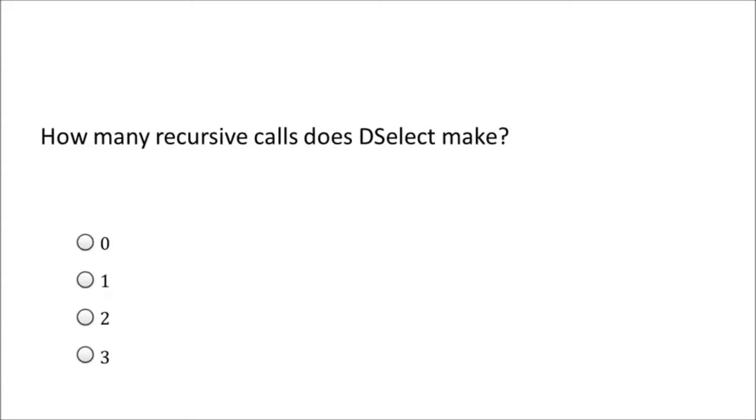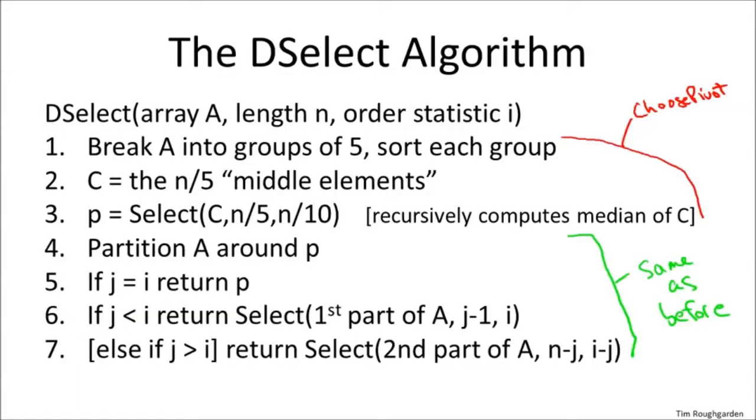All right, so the correct answer is two. There are two recursive calls in DSelect. And maybe the easiest way to answer this question is not to think too hard about it, and literally just inspect the code and count. Namely, there's one recursive call in line three, and there's one recursive call in either six or seven. So quite literally, there's seven lines of code, and two of the ones that get executed have a recursive call. So the answer is two. Now, what's confusing is that in the randomized selection algorithm, we only had one recursive call. We had the recursive call in line six or seven, and we didn't have this one in line three. That one in line three is new compared to the randomized procedure.